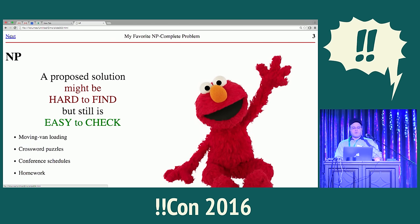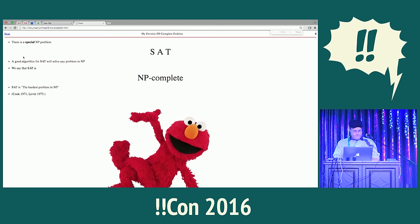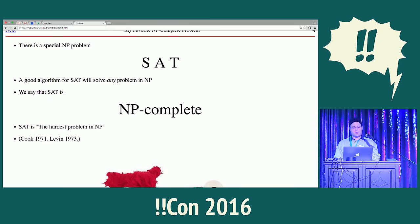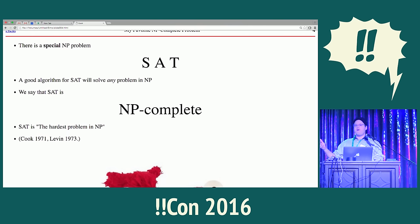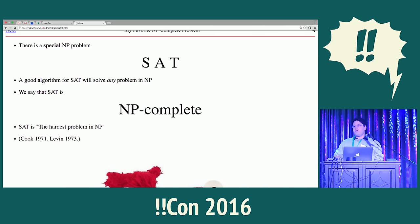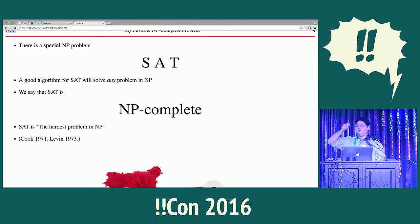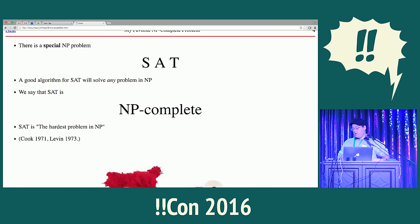Of these NP problems, there's one that is super special, called SAT, which is short for satisfiability. The problem is: somebody gives you a formula involving ANDs, ORs, NOTs, and variables, and the question is whether there's a way to assign true/false values to the variables so the formula comes out true. It's clearly NP because if somebody magically said 'make this one true, this one false,' you could check by just evaluating the formula. But it could in principle be very difficult to find what values to assign to make the formula true — and there might not be any.